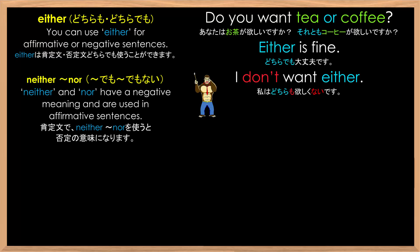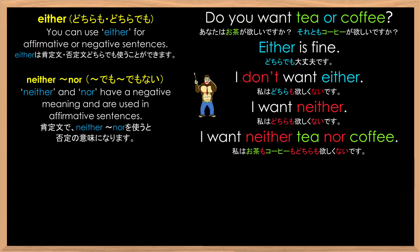Neither and nor have a negative meaning and are used in affirmative sentences. As in, 'I want neither.' And, 'I want neither tea nor coffee.' As you can see here, because neither and nor are negative words, they make the sentence negative without using a negative verb or a negative be-verb.